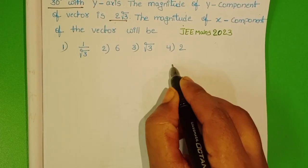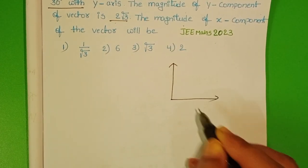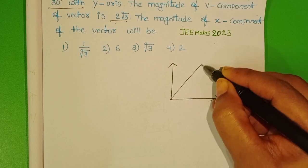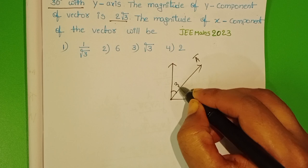Let us take the vector as A. A makes an angle of 30 degrees with the Y-axis.